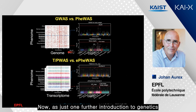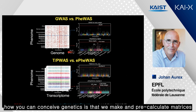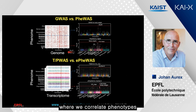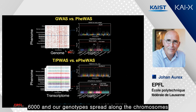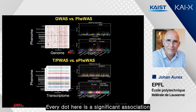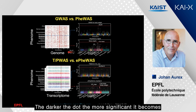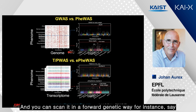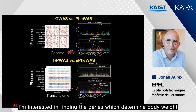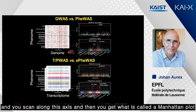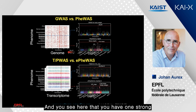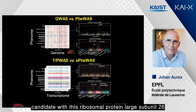As a further introduction to genetics: you can conceive genetics by pre-calculating matrices where we correlate 6,000 phenotypes with genotypes spread around the chromosomes. Every dot here is a significant association; the darker the dot, the more significant it becomes. You can scan in a forward genetic way — for instance, to find the genes which determine body weight — and you get what is called a Manhattan plot. You see one strong candidate: ribosomal protein large subunit 26.